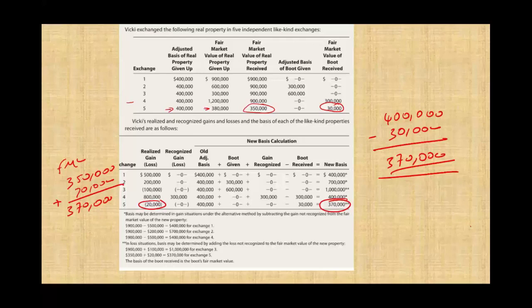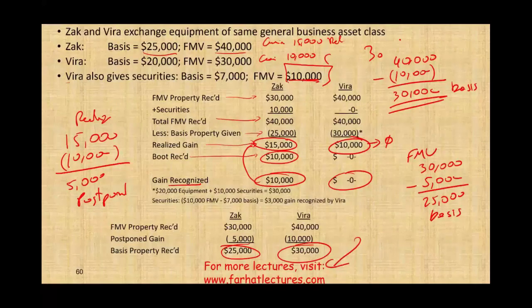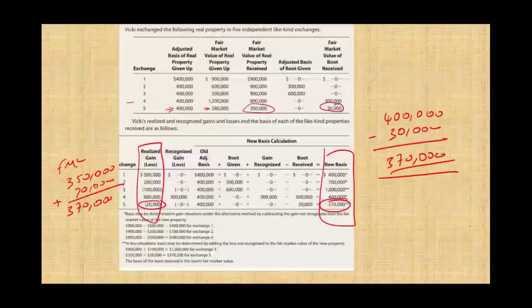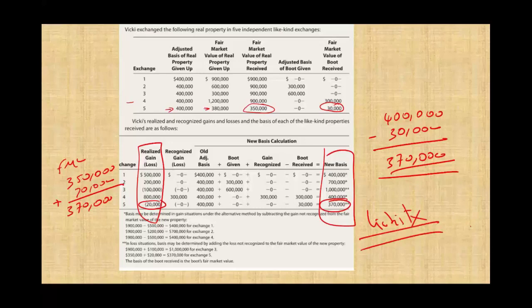This exercise demonstrates how to compute the realized gain, realized loss, and basis in various like-kind exchange scenarios. This topic is heavily tested on the CPA exam — make sure you understand it. In the next session, we will work through exchanges involving liabilities assumed or given up by the two parties, which adds a bit more complexity but is essentially part of the boot calculation.